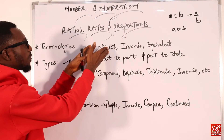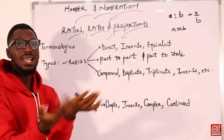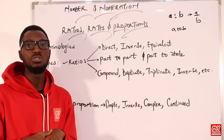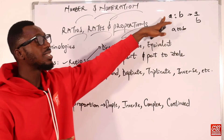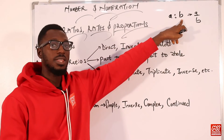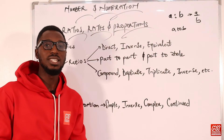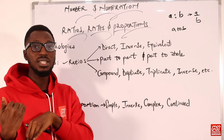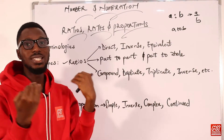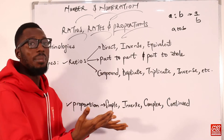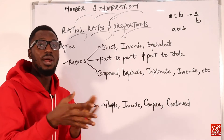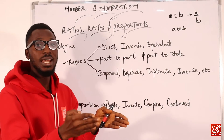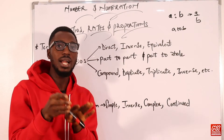When we say ratios are direct, it tells you that as the antecedent increases, the consequent also increases — they are moving in the same direction. If the consequent is decreasing as well, the ratio is decreasing. Direct ratios are quantities actually moving in the same direction in terms of value.